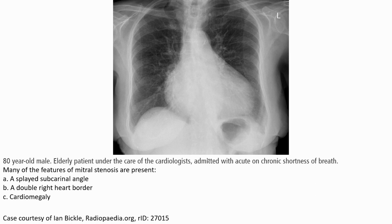This is a case of an 80-year-old male referred to cardiology with chronic shortness of breath. In this radiograph, many signs of mitral stenosis are visible, like a oblique subcardinal angle, double right cardiac border, and cardiomegaly.